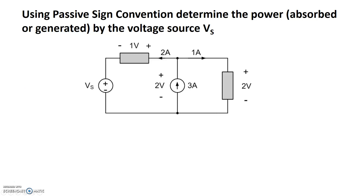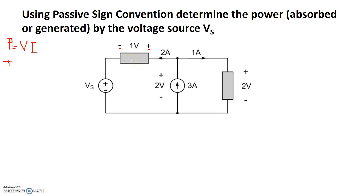Before we go into trying to solve this problem, let's quickly do a review of passive sign convention. Passive sign convention is basically a reference convention. Since current and voltage have both magnitude and polarity, passive sign convention says that for any element, the current enters the positive voltage node and exits out of the negative voltage node. If that's the case, power, written as P equals voltage times current, is positive for devices that follow the passive sign convention and negative for devices that do not.